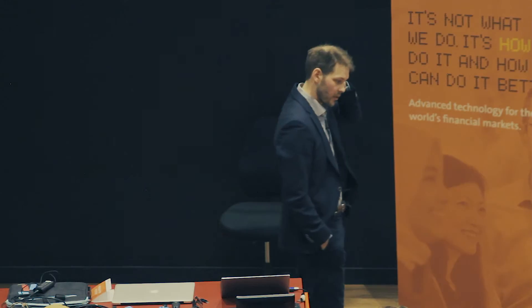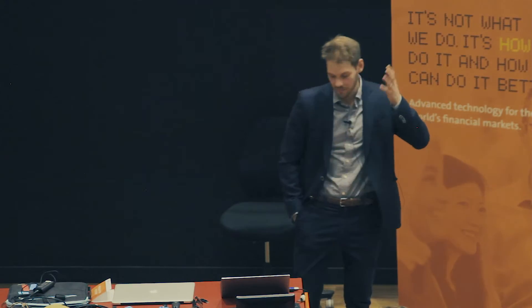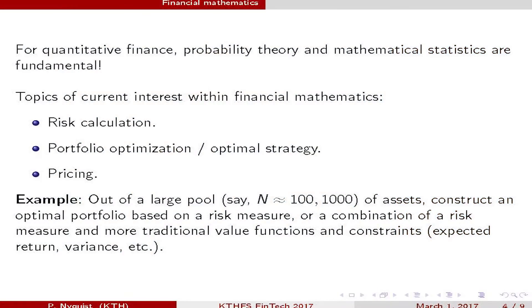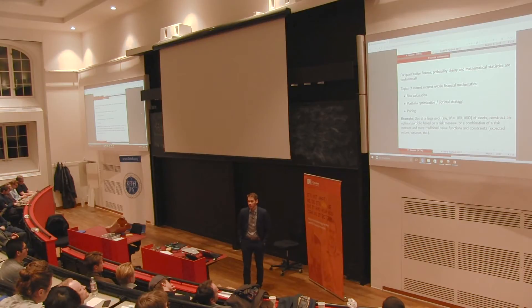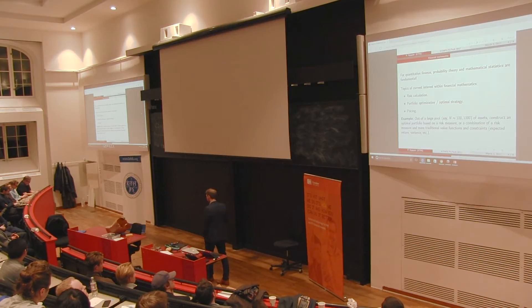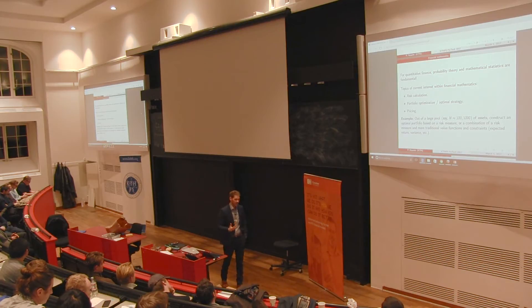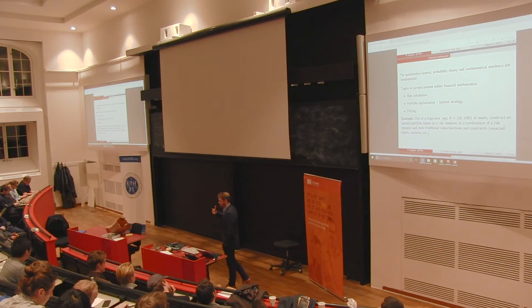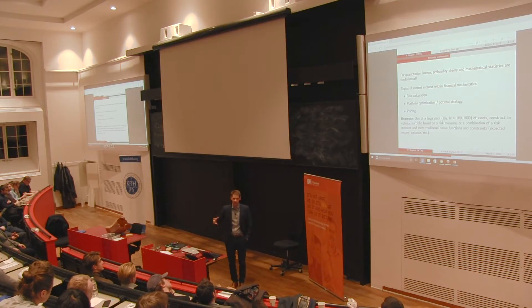Think about the following problem: you have a large pool of assets — say a hundred or a thousand — and you want to construct an optimal portfolio from those assets, thinking in terms of linear combinations. Optimality requires that you somehow measure what an optimal portfolio is. You phrase it in terms of a risk measure, or a risk measure plus more traditional value functions — expected return, variance — where either the value function or the constraints in your optimization are determined by a risk measure. The risk measure typically emphasizes tail risk: the risk of large losses.